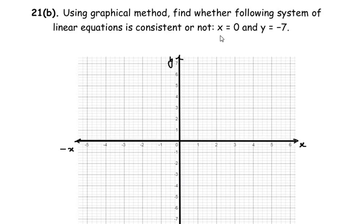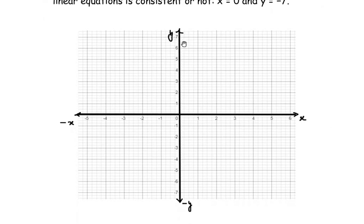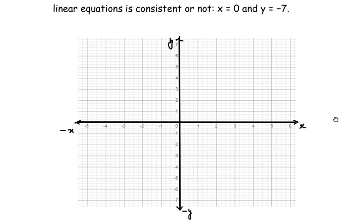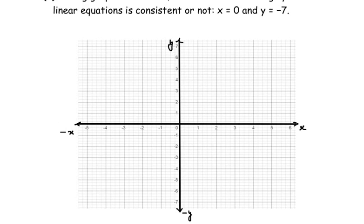Here again we have the x-axis and the y-axis. Now let us mark the points. When x=0, we have to consider all the coordinates of the y-axis. So for x=0, let me highlight the y-axis over here. This entire y-axis now represents x=0.